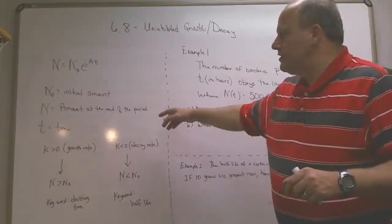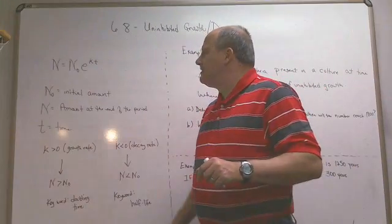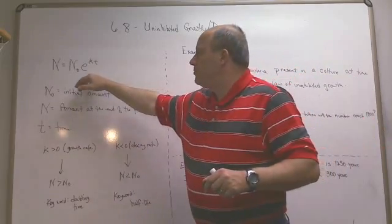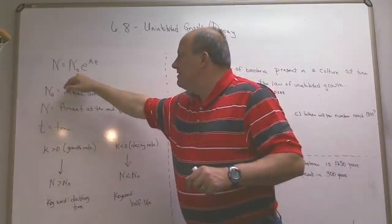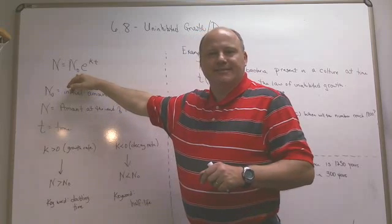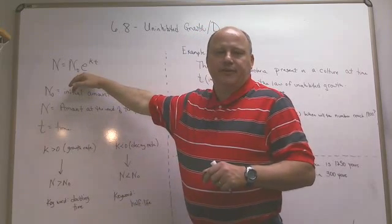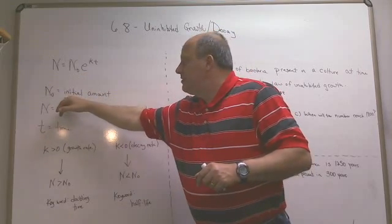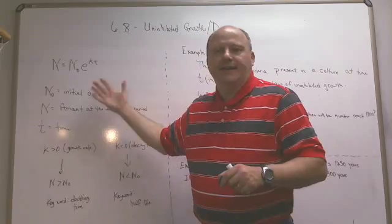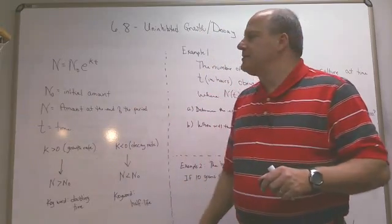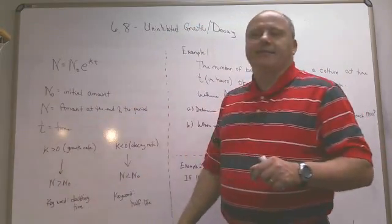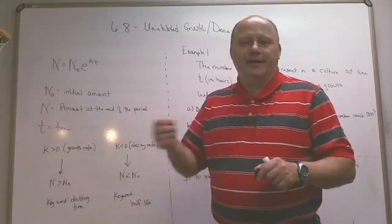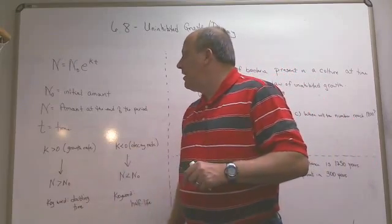So this is the formula, N equals N sub 0 e to the kt. Let me tell you what these variables are representing. N sub 0, that sub 0 is just basically at time 0, so the N sub 0 is the initial amount at time 0. And then N is the amount at the end of the period. So you begin with something and you end with something at a certain time, and t is the time.